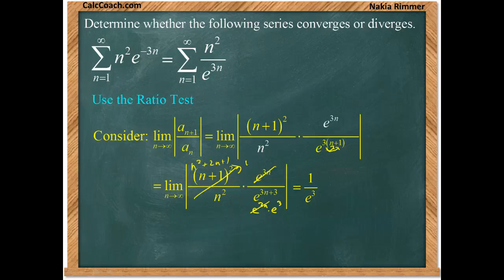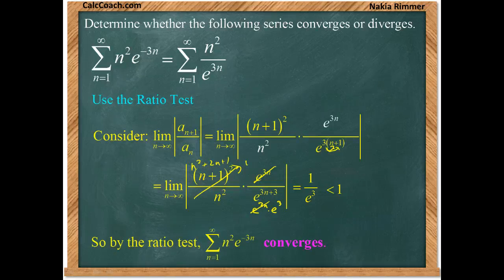Ultimately, then we have 1 over e cubed. The ratio test will tell you convergence or divergence based on the size of this limit. This guy here is less than 1. When your limit is less than 1, the ratio test tells you convergence. So by the ratio test, our original series converges.